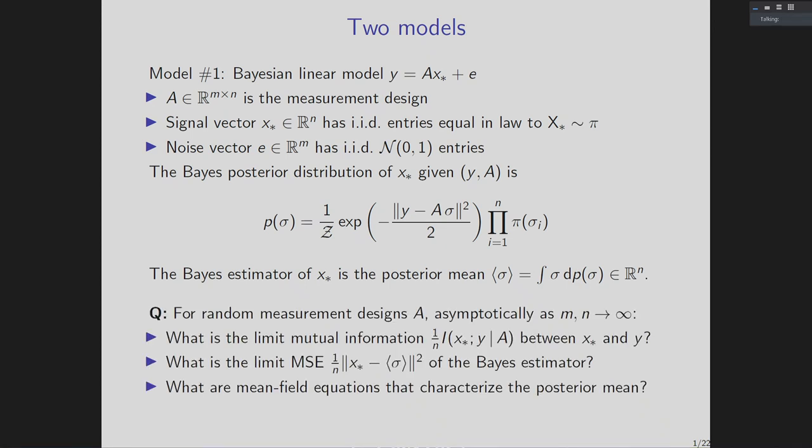For purposes of statistical estimation, we'd often be interested in computing the posterior mean of X star — the ensemble or Gibbs average of sigma over this distribution. I'll use bracket notation throughout to denote this kind of ensemble average. The asymptotic questions we're interested in are: as M and N go to infinity, what is the limit of the mutual information between X star and the observation vector Y? What is the limit of the mean squared error of the posterior mean estimator? And can we write down a system of mean field equations characterizing this posterior mean?